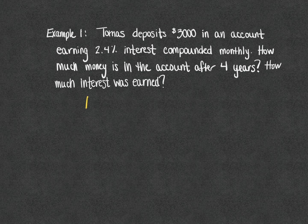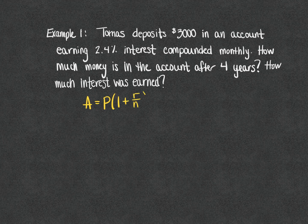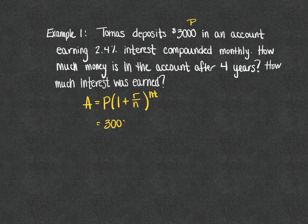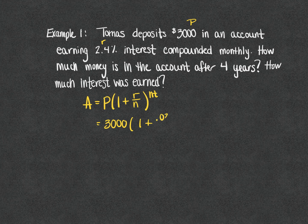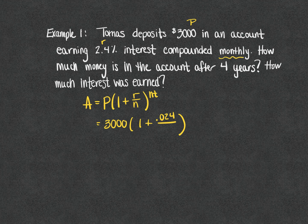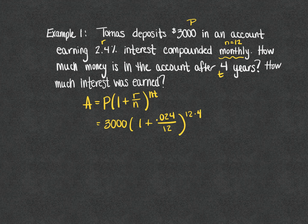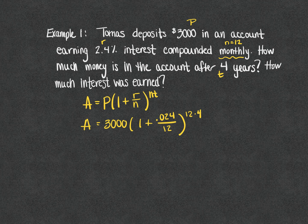When we go to our compound interest formula, Tomas deposits $3,000 in an account so that is P, the principal or the starting amount. 2.4% interest is our rate, and we're going to write that in decimal form. Compounded monthly tells us that the value of n is 12, and he is going to keep his money in the account for 4 years, so that is your time. We will be finding A, the total value in the account.